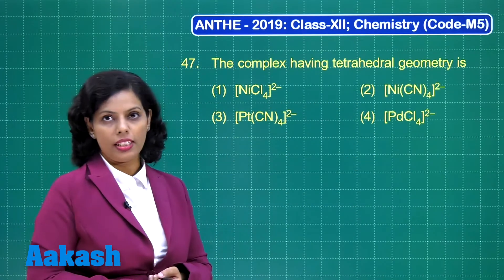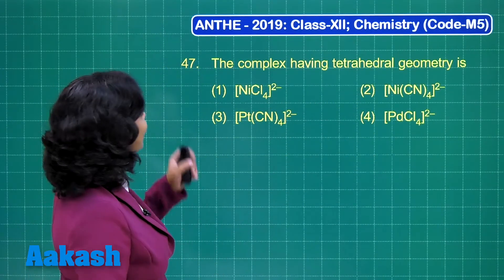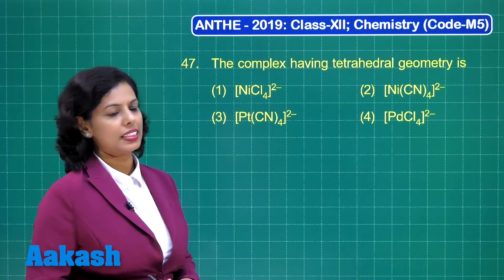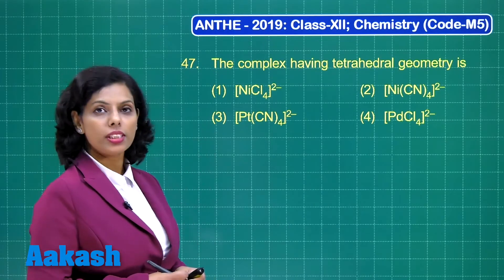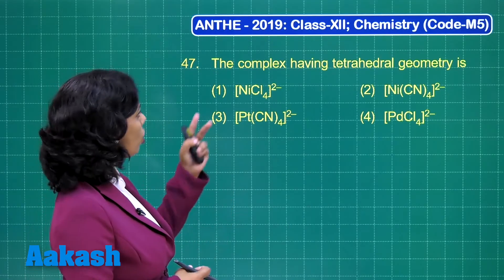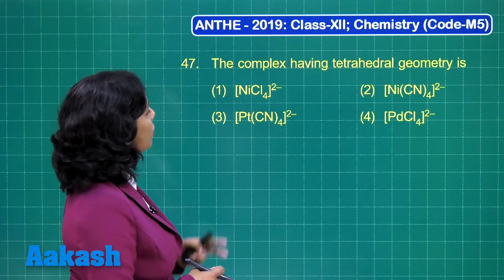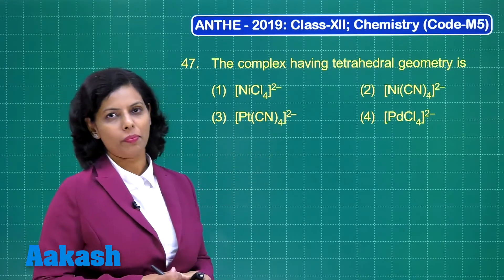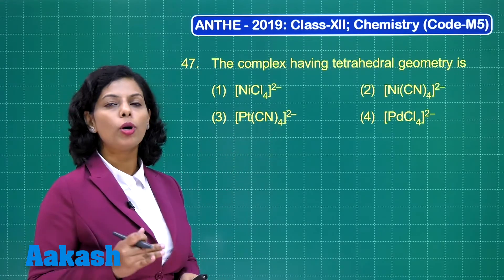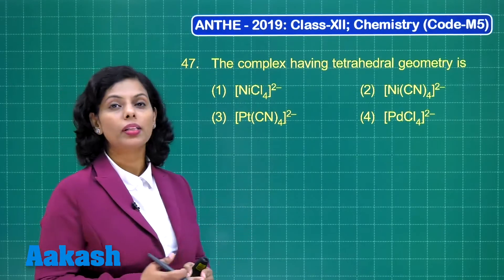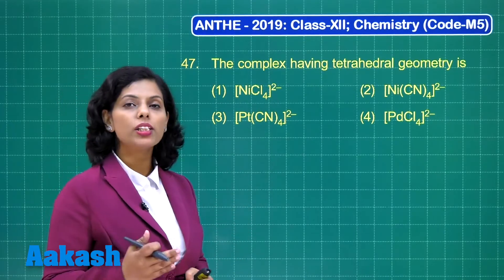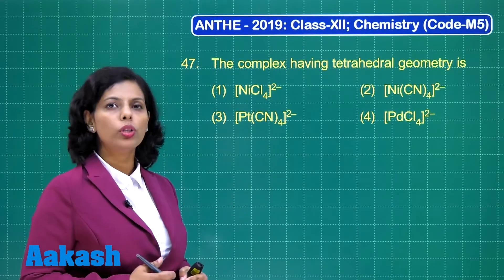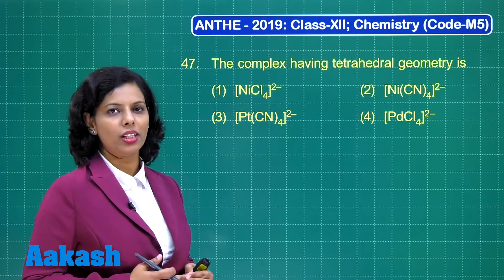Question number 47 states: the complex having tetrahedral geometry is. If you look at the given options, you will see there are two complexes of nickel, one complex of platinum, and one of palladium. The complexes of platinum and palladium generally show square planar geometry, not tetrahedral.